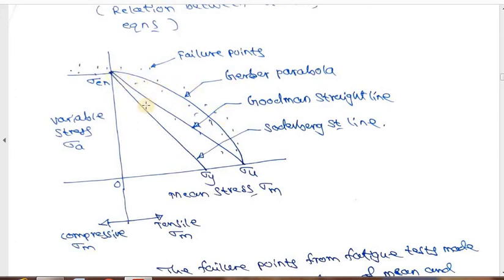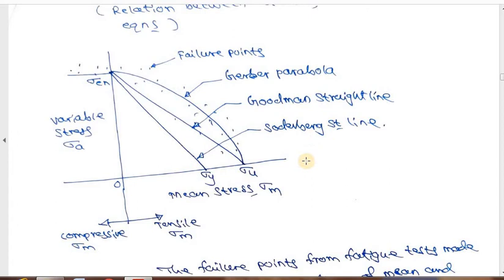Soderberg considered the yield point stress instead of the ultimate stress. The reasoning is that once the material reaches its yield point, plastic deformation has occurred — so it is better to use yield point stress rather than ultimate stress as the limit. Soderberg connects the endurance limit with the yield point stress sigma_y by a straight line. These are the three important relations: Gerber parabola, Goodman straight line, and Soderberg straight line.